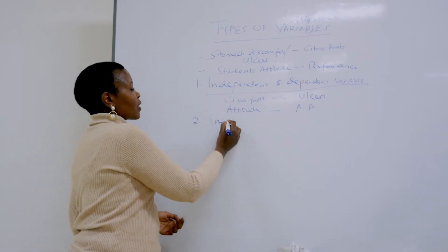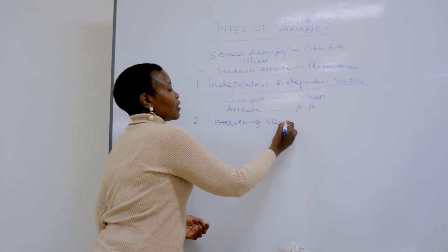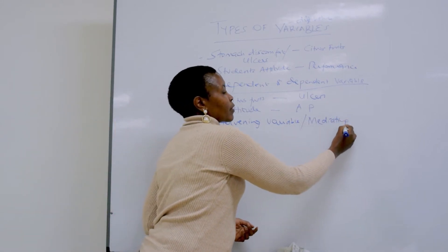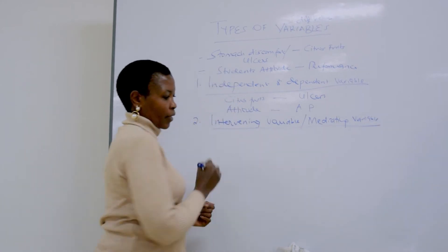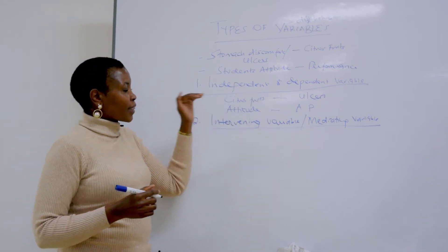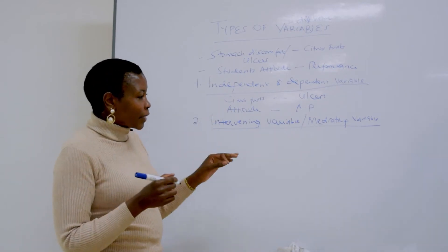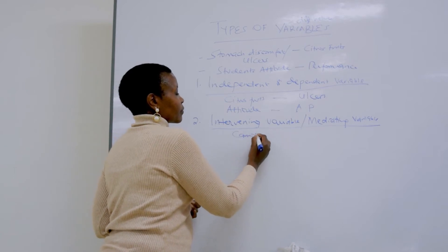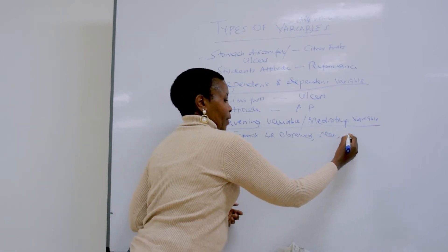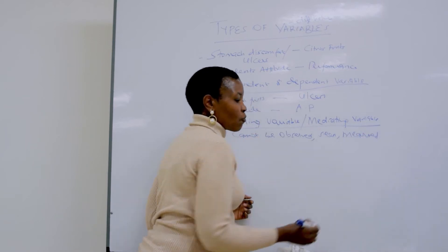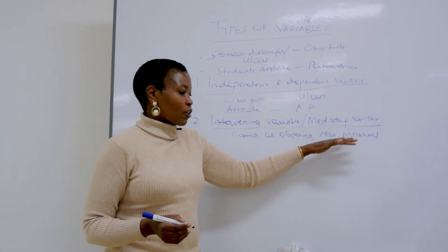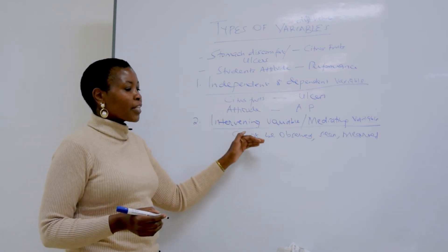The second type is called the intervening variable, which psychologists also call a mediating variable — it mediates. Intervening variables are variables that affect the observed phenomena, but they cannot be observed, seen, or measured. This is one of the disadvantages of intervening variables. They are normally called hypothetical variables.